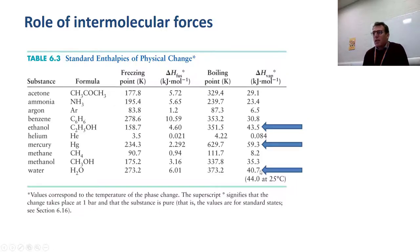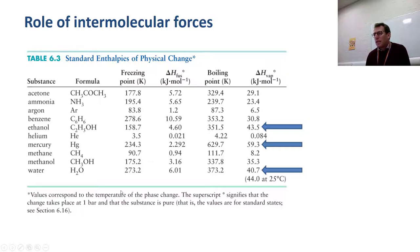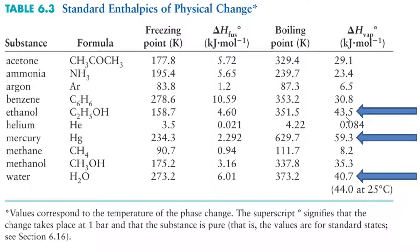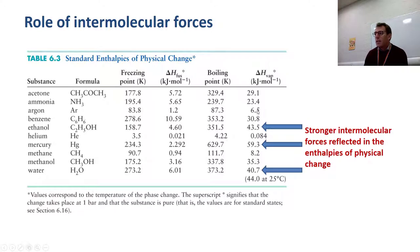We can get a sense of the extent of intermolecular forces from the enthalpy of vaporization. The stronger the intermolecular forces, the larger the enthalpy of vaporization. Looking at water, mercury, and ethanol, they have very high enthalpies of vaporization because of very strong intermolecular forces, compared to methane where the only intermolecular force is London dispersion forces, or ammonia where there is a polar force but it is relatively weak. So enthalpies of vaporization are essentially an indirect measure of the strength of intermolecular forces.